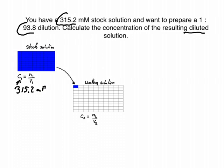So that's our C1. And what we do in this case is we just take one part of our stock solution and dilute it 1 to 93.8. That's the dilution factor.